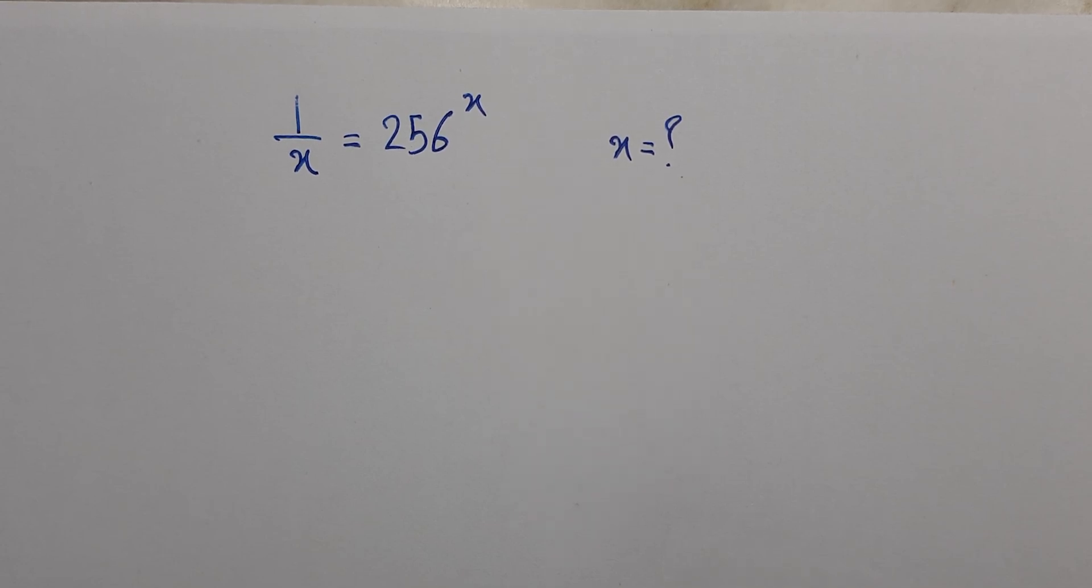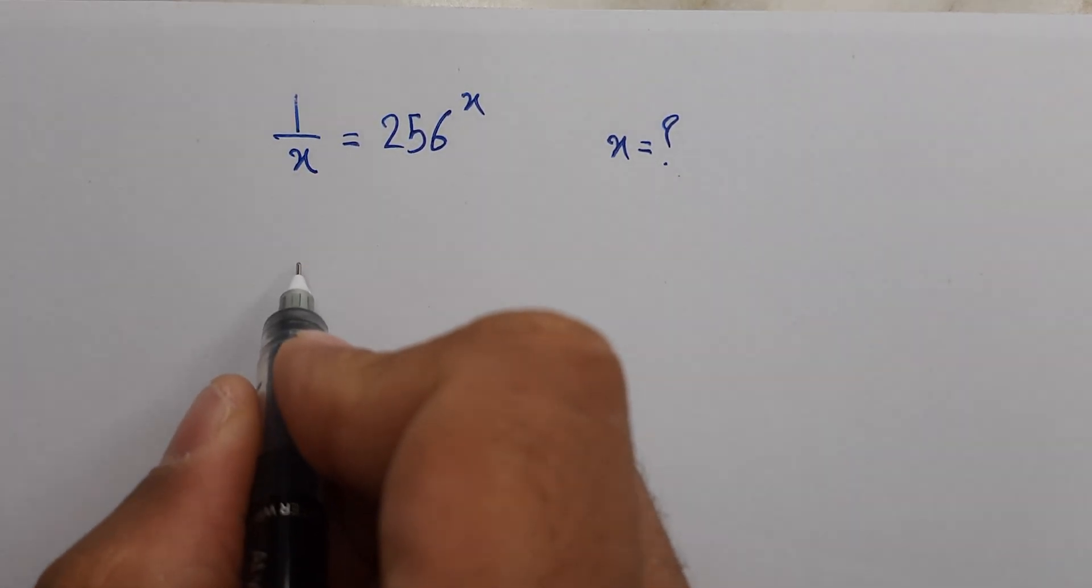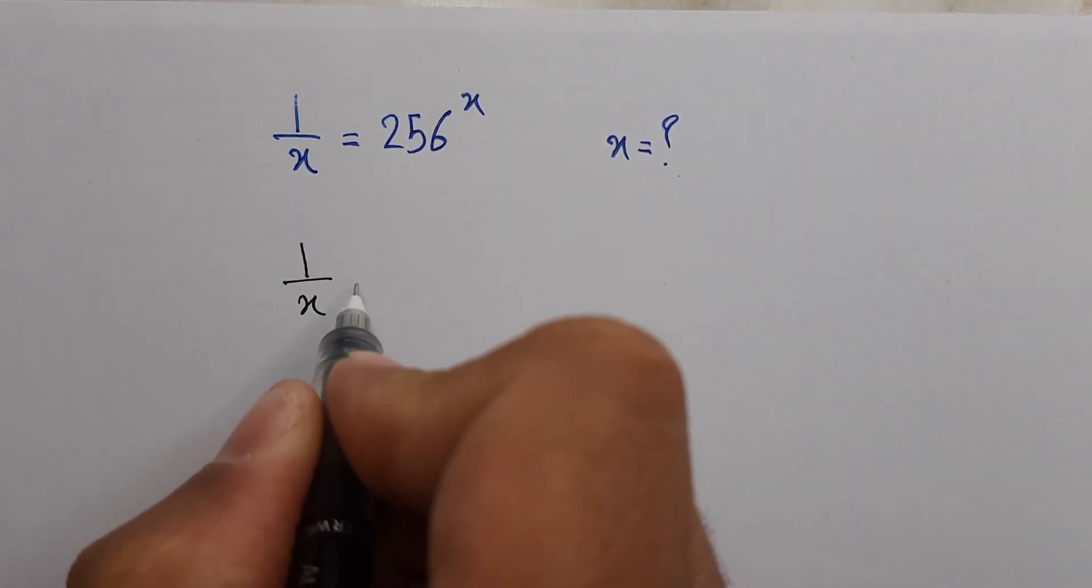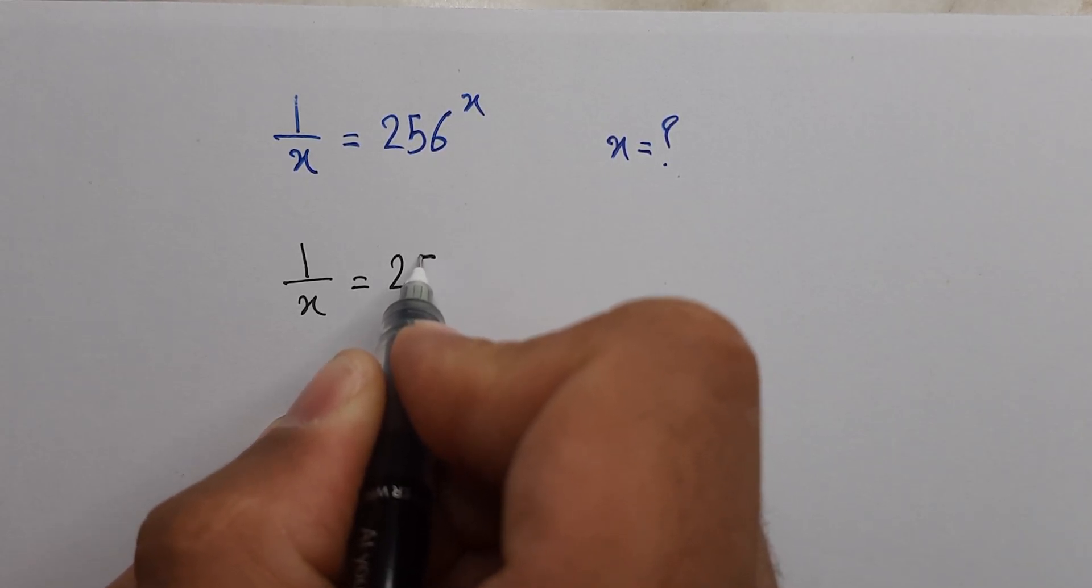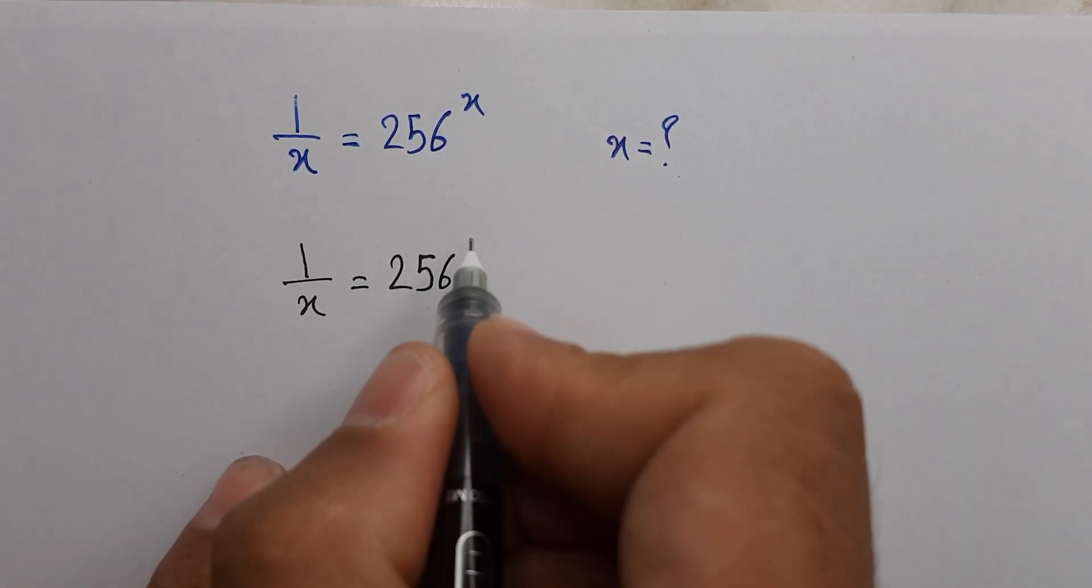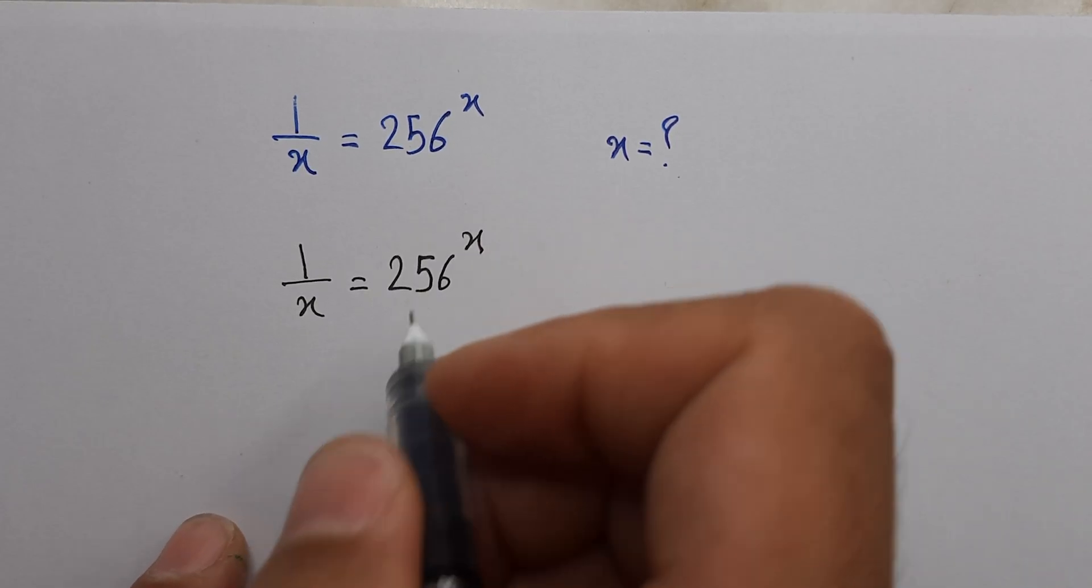What you can see here, on the left side we have 1 over x, equals 256 to the power x on the right side.